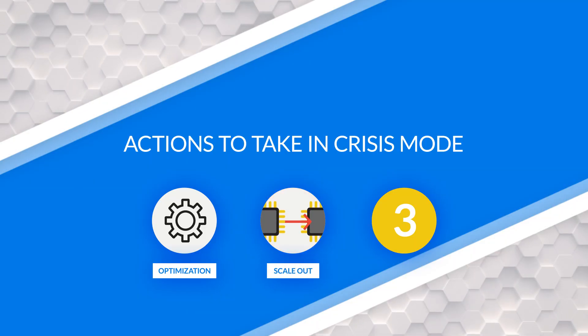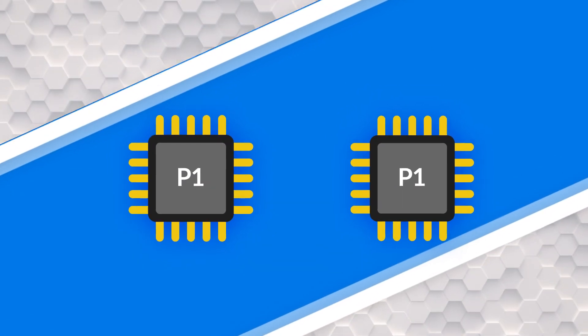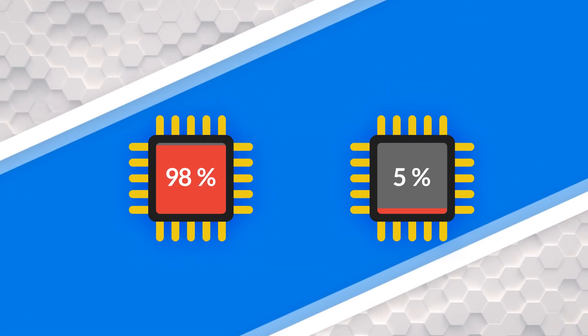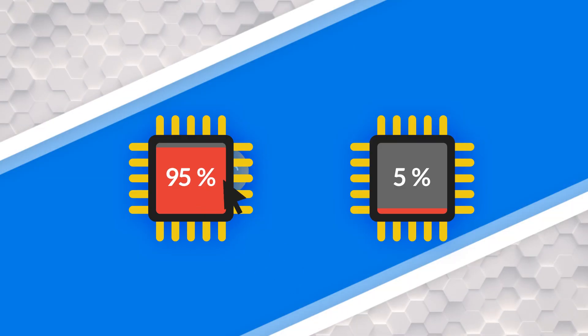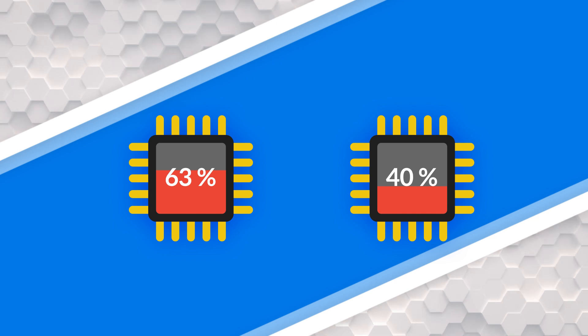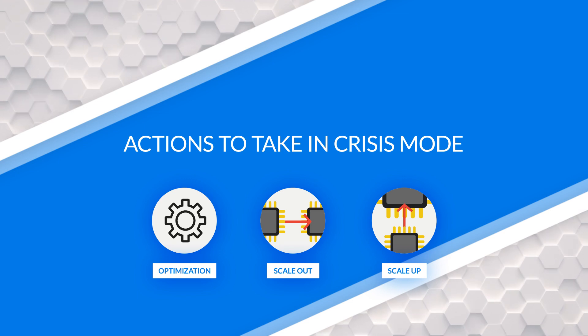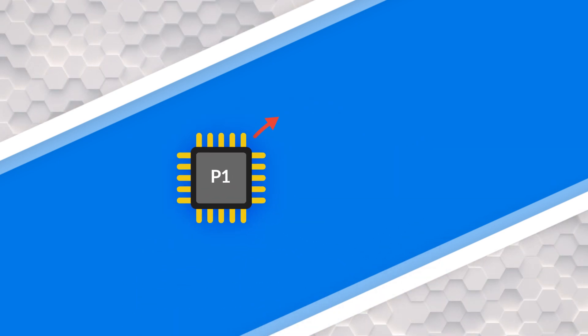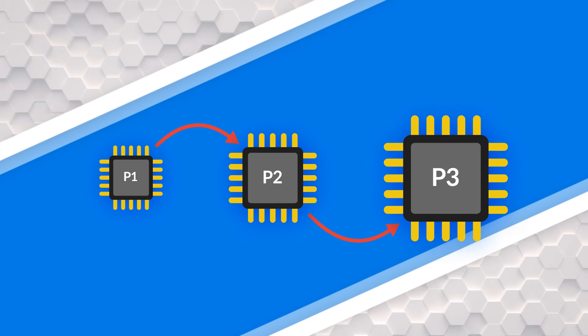The second option is scale out. You may have a P1 or two P1s, but most everything is on the first P1. If you find that you're going over or getting close to that line and you've done all the optimization you can do, maybe identify a given workspace that's causing significant load and get it off onto its own capacity to give more breathing room — a noisy neighbor type situation where one data set is really a bad actor. The last option, number three, is scale up — when we've looked at everything else and we need to go from a P1 to a P2 or a P2 to a P3. We've optimized, we can't really scale out anymore, we need more headroom.